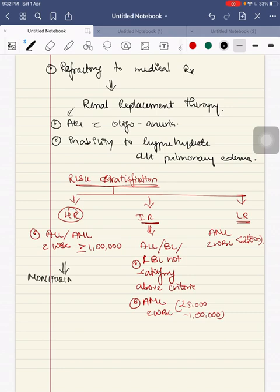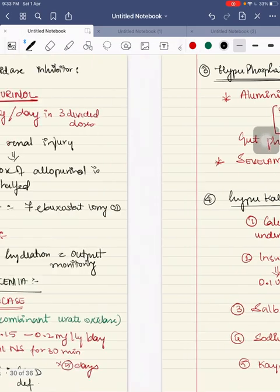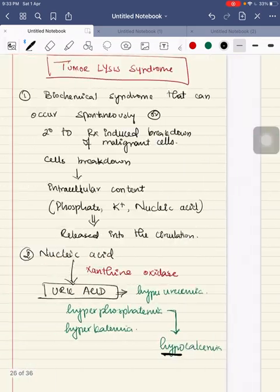How do you monitor in these patients? For high risk patients, you have to take 8 to 12 hourly blood samples. For intermediate risk, it is 12 to 24 hourly. And for low risk patients, at least you have to take the baseline investigations.